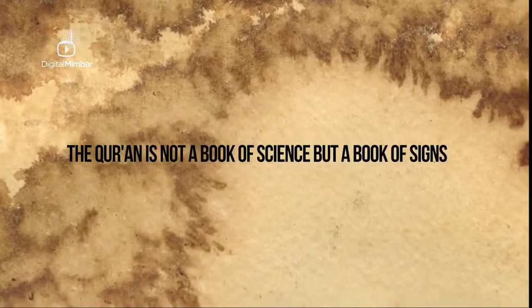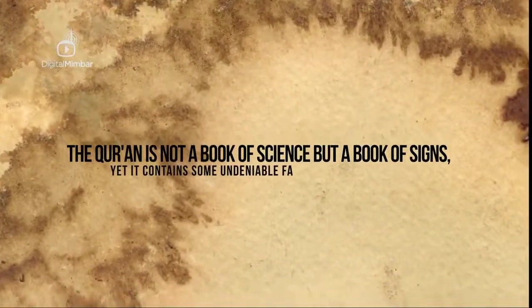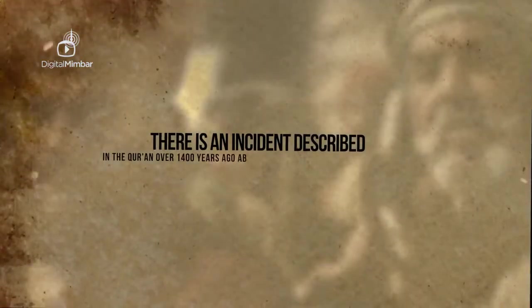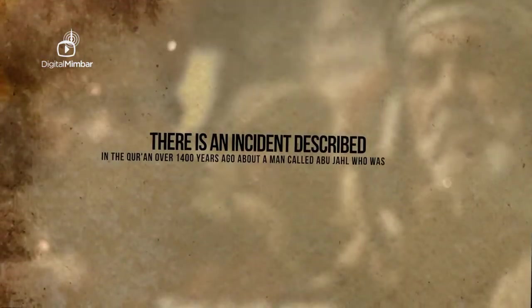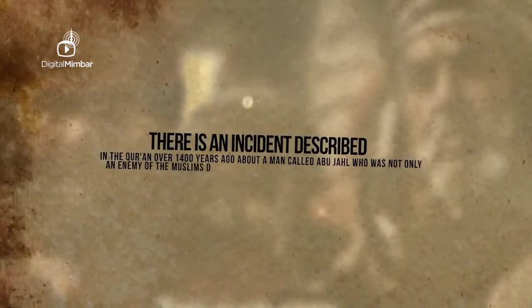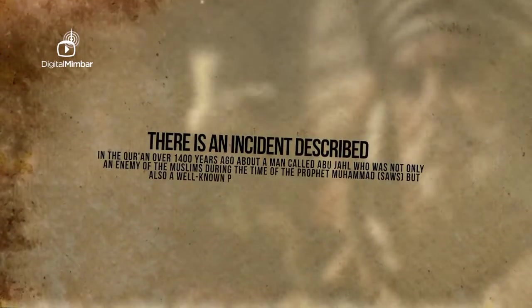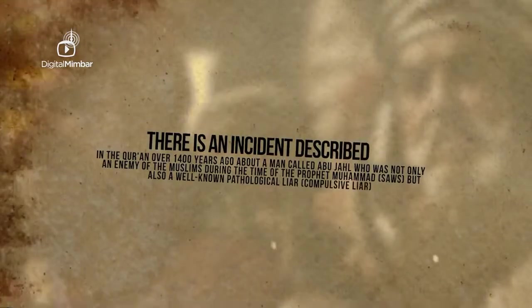The Quran is not a book of science but a book of signs, yet it contains undeniable facts related to science. There is an incident described in the Quran over 1400 years ago about a man called Abu Jahil, who was an enemy of the Muslims during the time of Prophet Muhammad and a well-known pathological liar.